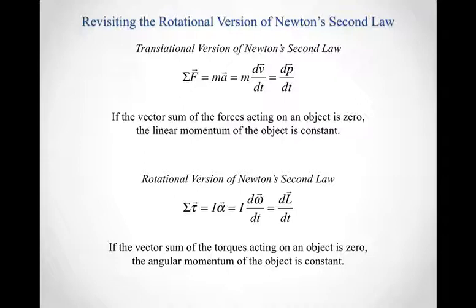Both versions of Newton's second law — the translational and the rotational — are really about keeping track of how forces act to change both linear and angular momentum for extended objects.